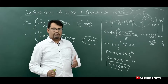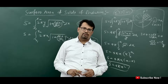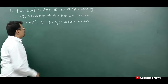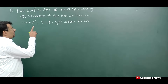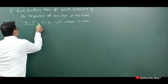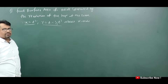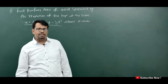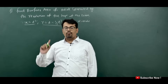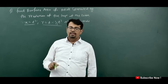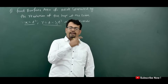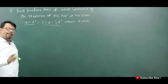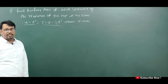This is the surface area of the sphere. Next question: find the surface area of the solid generated by the revolution of the loop of the curve x = t² and y = t − (1/3)t³. This is a parametric coordinate problem, similar to the first video you have learned.